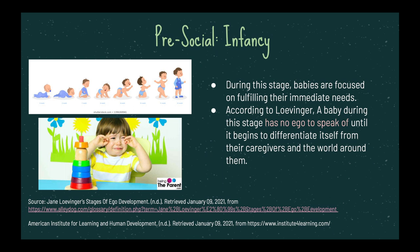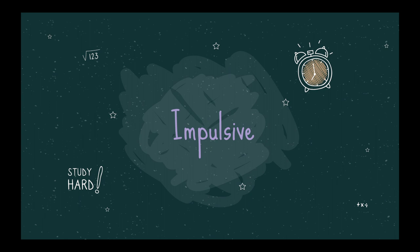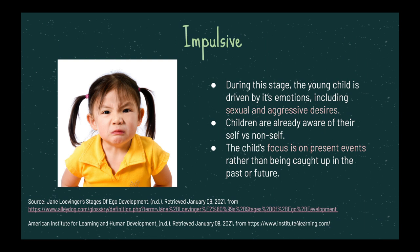The next stage is the impulsive stage. A young child during the impulsive stage is more focused on its emotions such as sexual and aggressive desires. Children are already aware of their self versus non-self. The child's focus is on present events rather than being caught up in the past or future. If a child wants something right now, all of its attention will be completely focused on what they want and their desires in that moment, rather than how they may behave in the future or the past.